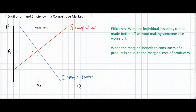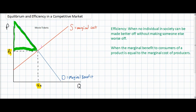The equilibrium price and quantity, labeled PE and QE, represent the most efficient combination of price and quantity in the market for movie tickets. The total amount of consumer surplus, represented by the green triangle, and the total amount of producer surplus, represented by the purple triangle, are maximized at PE and QE. Hence, this is the most efficient price and quantity combination.